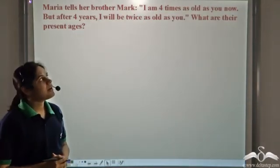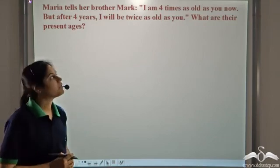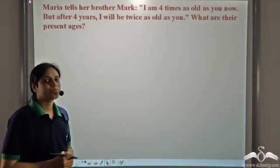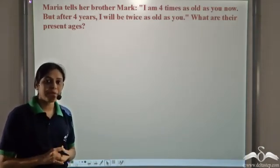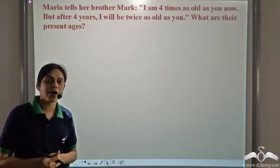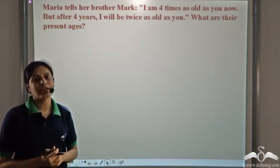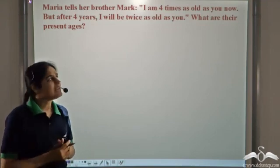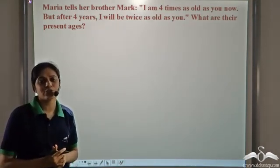Maria tells her brother Mark: I am four times as old as you now, but after four years I will be twice as old as you. What are their present ages? At present Maria is four times as old as her brother Mark, but after four years she will be only twice as old as Mark. Doesn't this puzzle you? So let us find their present ages and see whether it is actually possible.